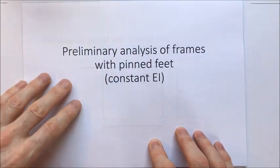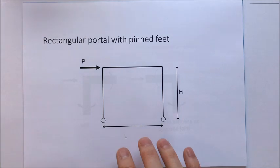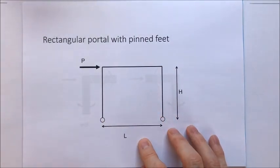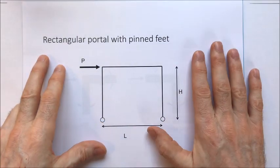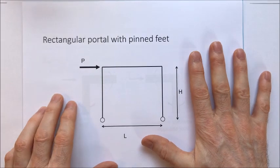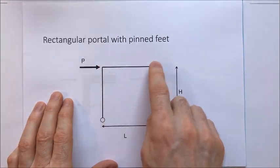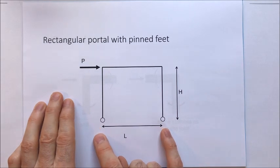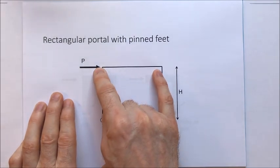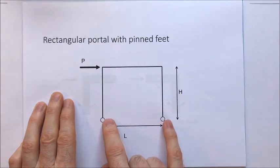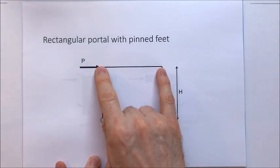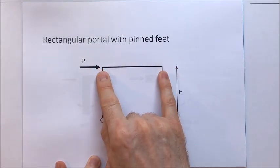Here's the frame we're going to look at: a frame with pinned feet and constant EI. It looks a lot like the kind of frame you'd encounter in year one structures, except that this is actually statically indeterminate. What we're going to do is consider the stiffness of these legs, consider the stiffness of the joints, and work out what the horizontal reactions are.